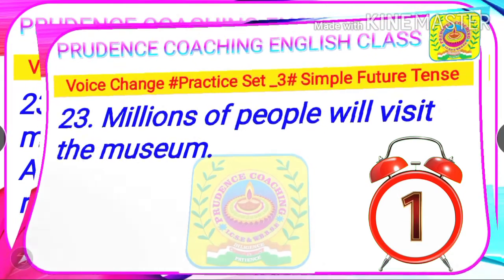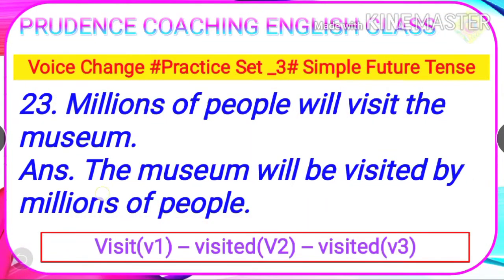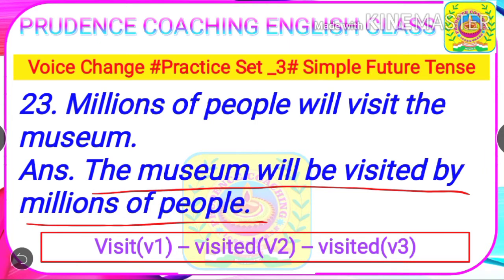The time is finished. The answer is: The museum will be visited by millions of people. This is simple future tense, and the verb 'visited' is the past participle form.